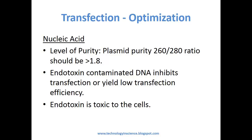Nucleic acid quality is also important for transfection. The plasmid purity, or the 260/280 ratio of the plasmid used for transfection, should be greater than 1.8. Most of the time, plasmid preps get contaminated with endotoxins, and endotoxin-contaminated DNA inhibits transfection or yields very low transfection efficiency.